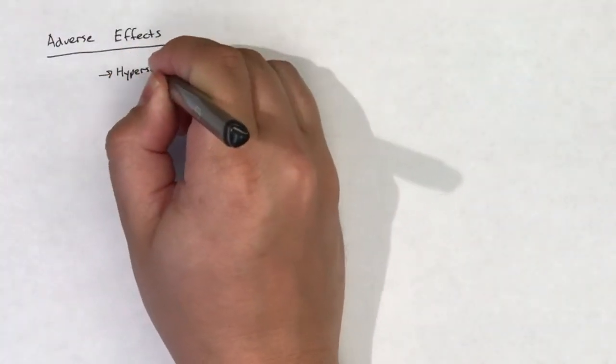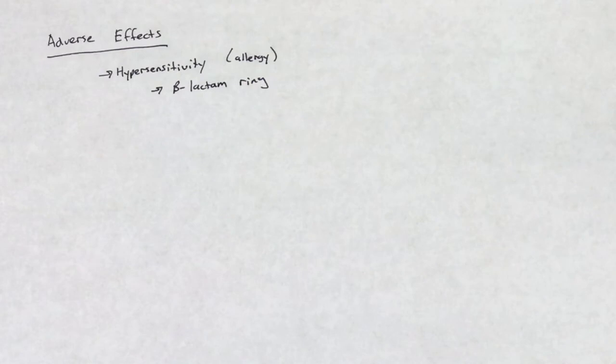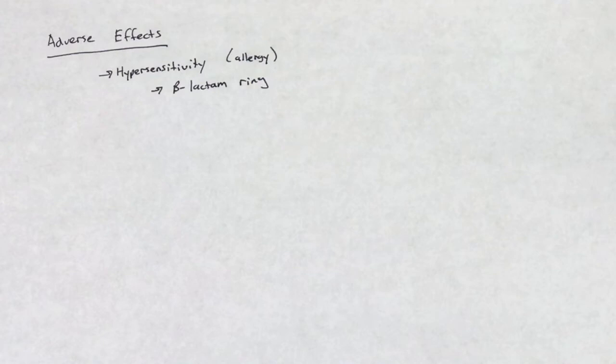The adverse effects of third-generation cephalosporins are similar to the adverse effects described in the cephalosporin overview video. Hypersensitivity to the beta-lactam ring remains the most common adverse effect.